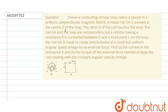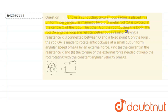Hello everyone, let's solve the question. The question says: a figure shows a conducting circular loop of radius A placed in a uniform perpendicular magnetic field B. A metal rod OA is pivoted at the center of the loop; the other end A of the rod touches the loop. The rod OA and the loop are resistance-less, but a resistance R is connected between O and a fixed point C on the loop. The rod OA is made to rotate anticlockwise at a small but uniform angular speed omega by an external force.